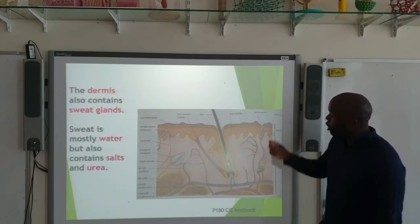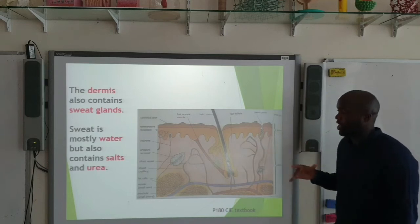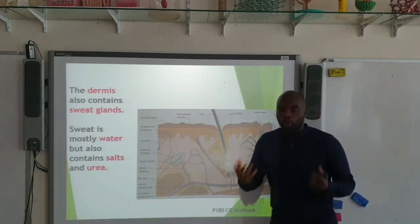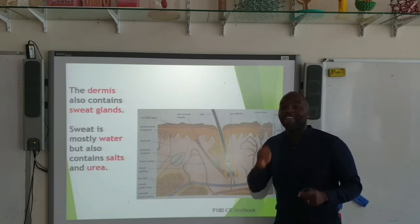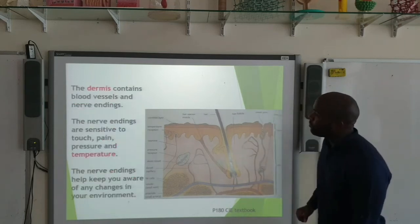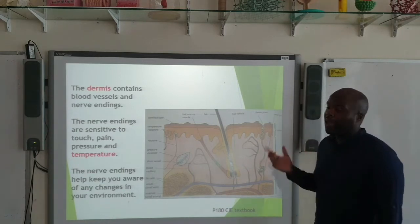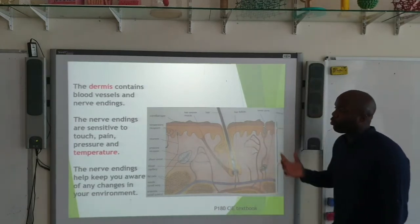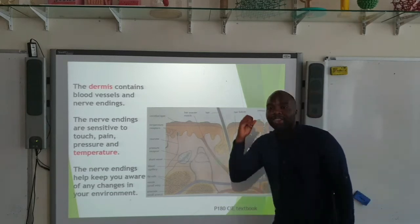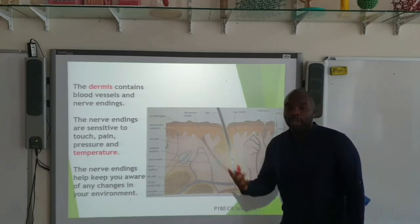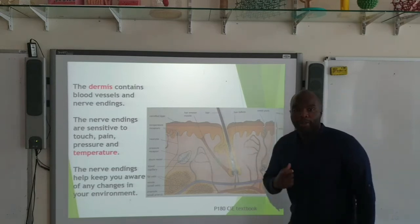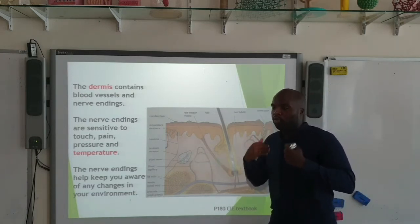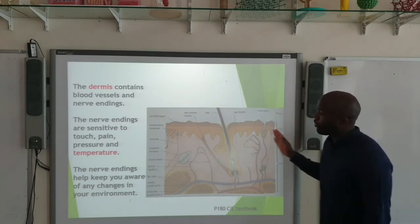The dermis also contains sweat glands, which produce sweat. Sweat is mainly water, but it also contains salt and urea. We're going to look at why sweat is important in a few moments. The dermis also contains blood vessels and nerve endings. These nerve endings are sensitive to things such as touch, pain, pressure, and importantly, temperature — because they can help you maintain a constant internal condition.